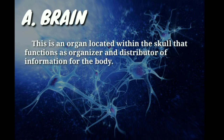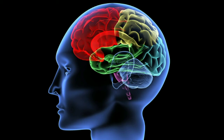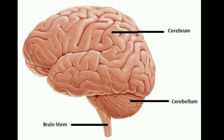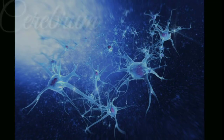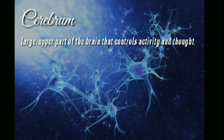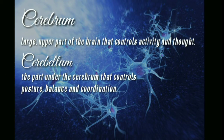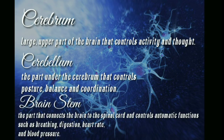The first main component of the CNS is the brain. The brain is an organ located within the skull that functions as the organizer and distributor of information for the body. The brain has three main parts: the cerebrum, cerebellum, and brainstem. The cerebrum is the large upper part of the brain that controls activity. The cerebellum controls balance and coordination. The brainstem connects the brain to the spinal cord and controls automatic functions such as breathing, digestion, heart rate, and blood pressure.